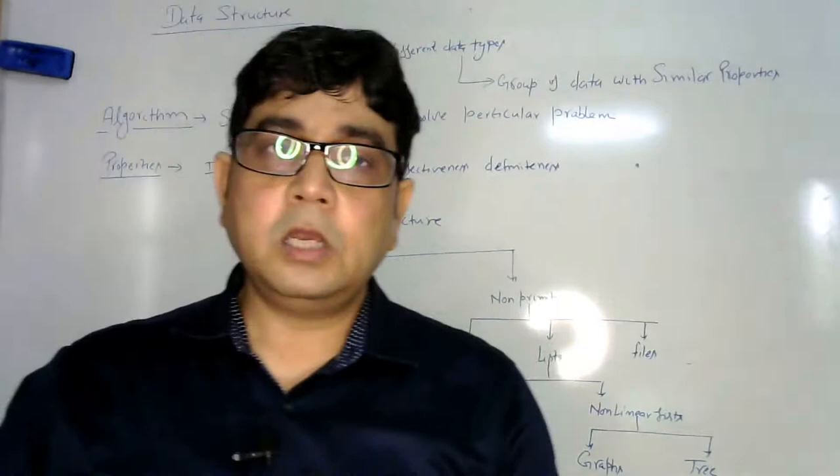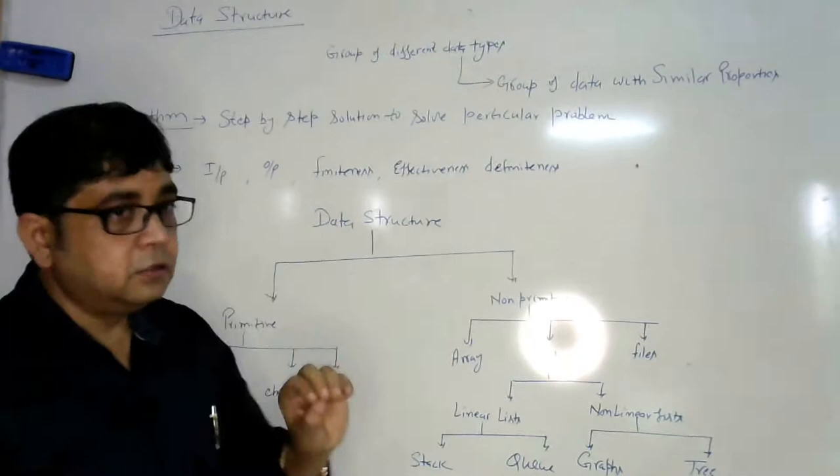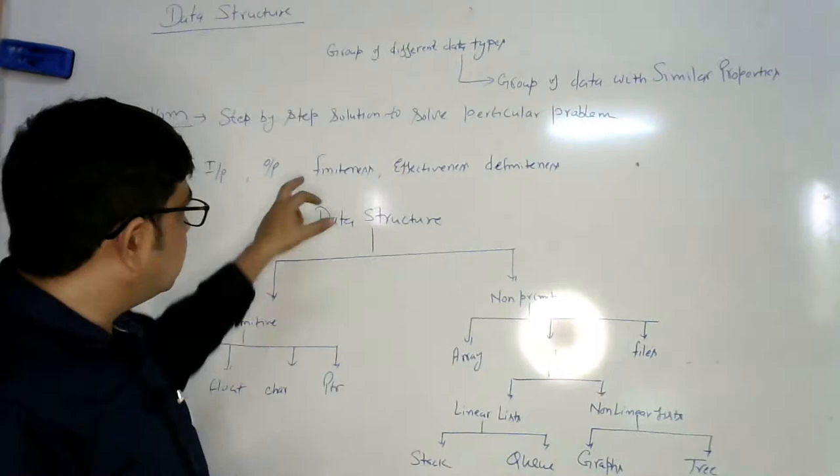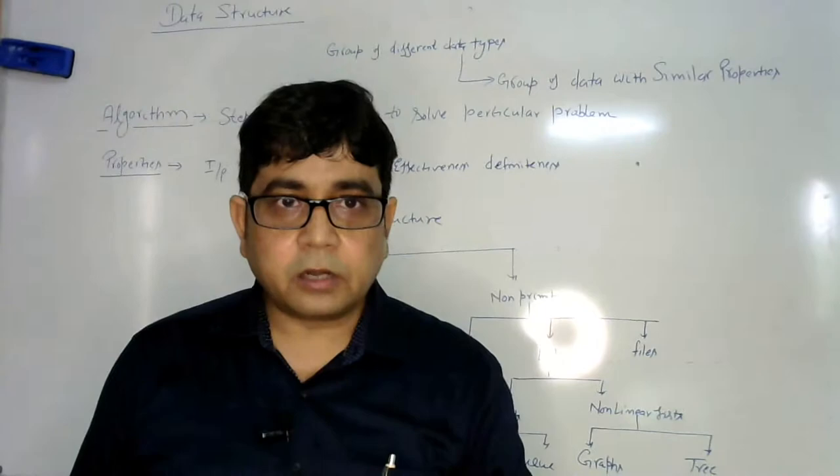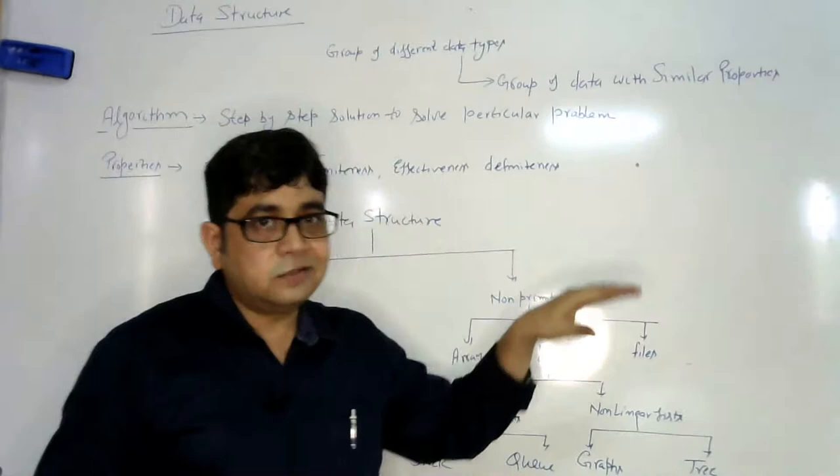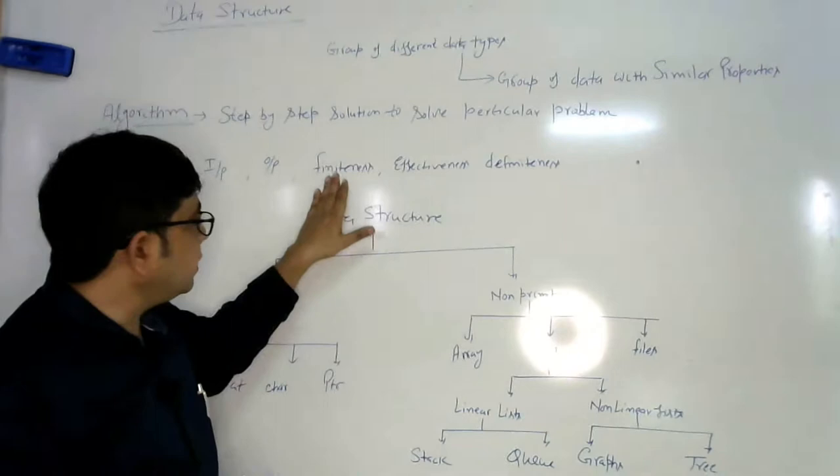Algorithm must have finite number of steps. Finite number of steps means after finite step, it must be terminated. We cannot write algorithm like anything, line one, line two and ten lines after dot dot dot and so on. We cannot write like this. That must have finite number of steps.